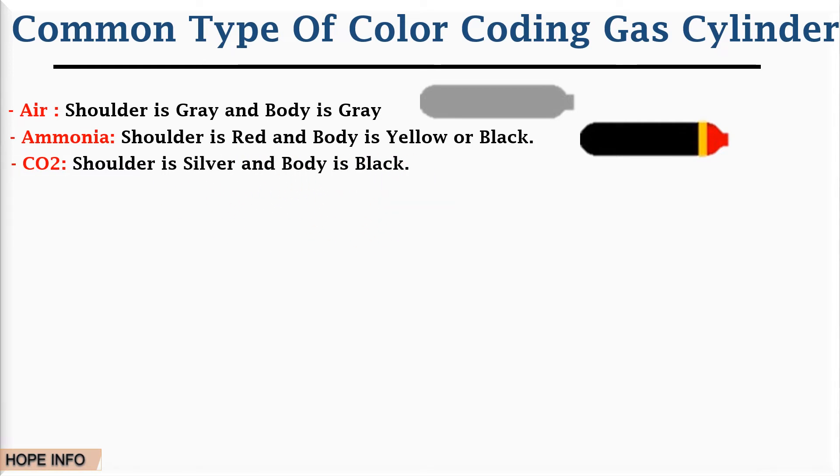Number three is carbon dioxide - the shoulder is silver and body is black. Chlorine has a yellow shoulder and yellow body.